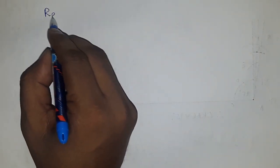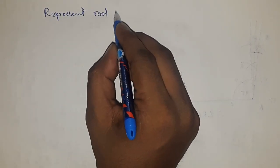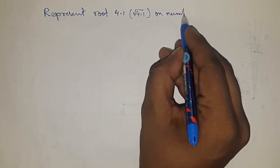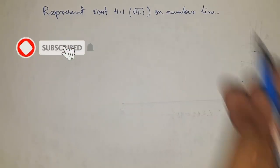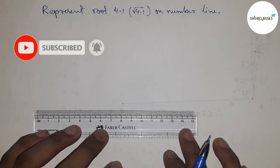Hi everyone, welcome to Sister Classes. Today we're talking about the representation of root 4.1 on a number line. Before starting, please subscribe to the channel and press the bell icon for future video notifications.